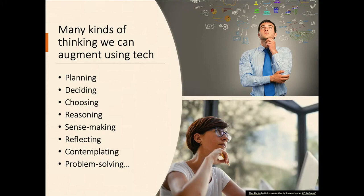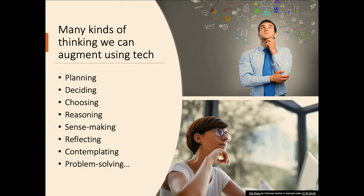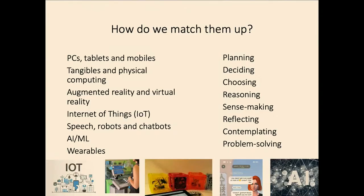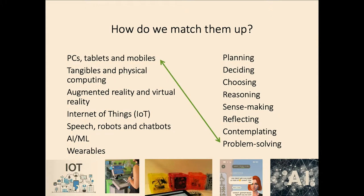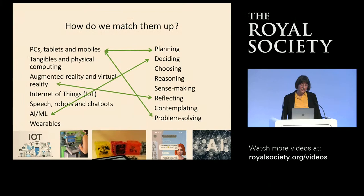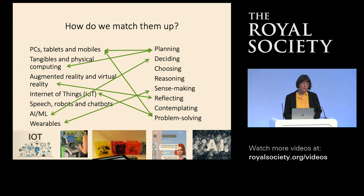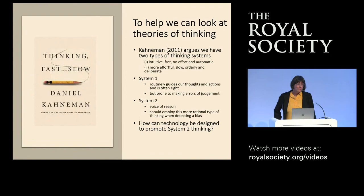This gets me on to thinking about thinking. There are many kinds of thinking we can use those different technologies to augment — whether it's planning, deciding what to do, choosing between alternatives, reasoning about things, making sense, reflecting on what's happening, contemplating, or solving problems. How do we match this up? Which of these technologies do we use to support these different thinking types? We could use AI for decision-making, augmented reality for reflecting, tangibles for planning — there really isn't any systematic research or guidance out there.